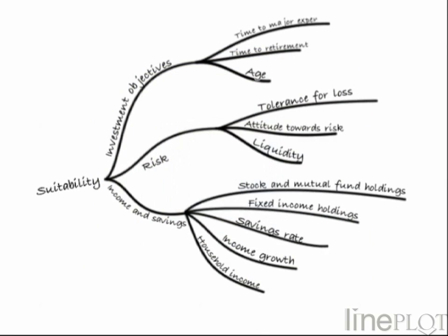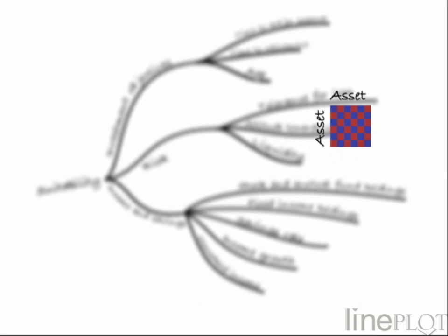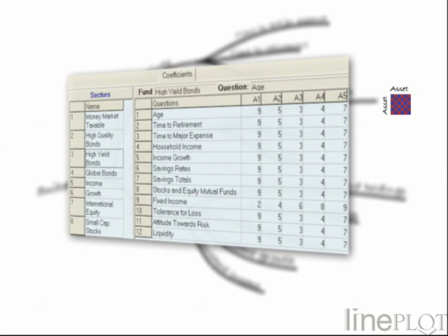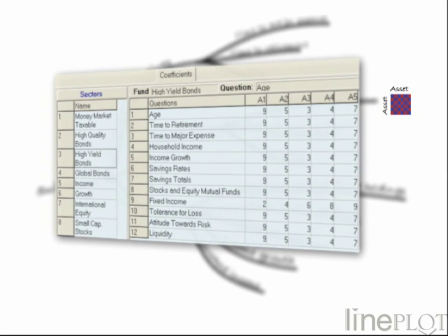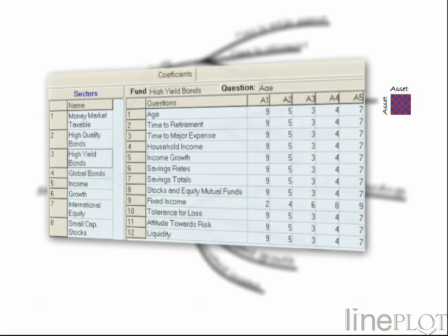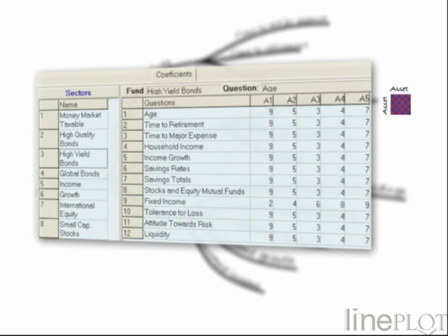For each of these factors, the financial advisor ranks the relative preferences for each asset class for each multiple-choice answer. For example, if the factor was need for current income and an investor's need for current income was high, then bonds would be preferable to small-cap stocks. For a different investor who has no need for current income, the opposite would be true.